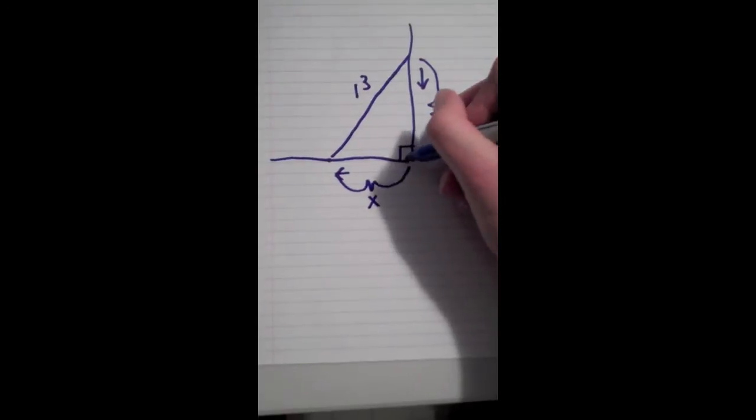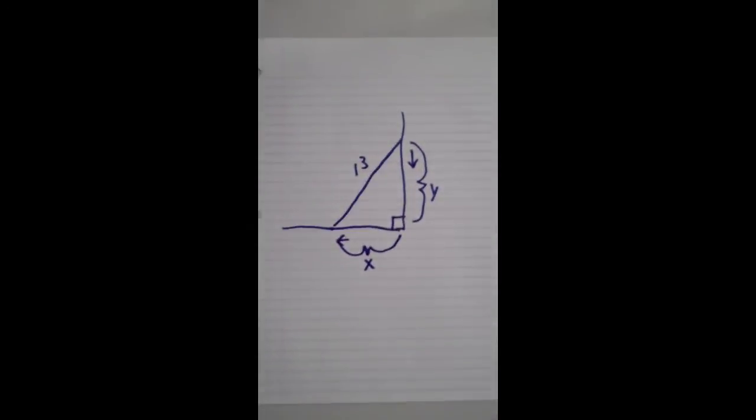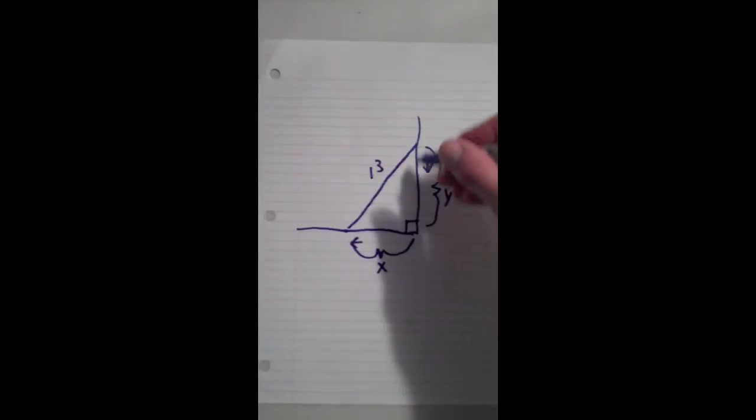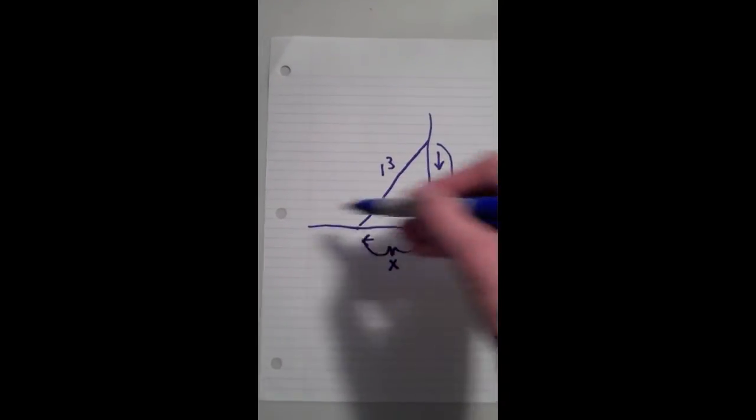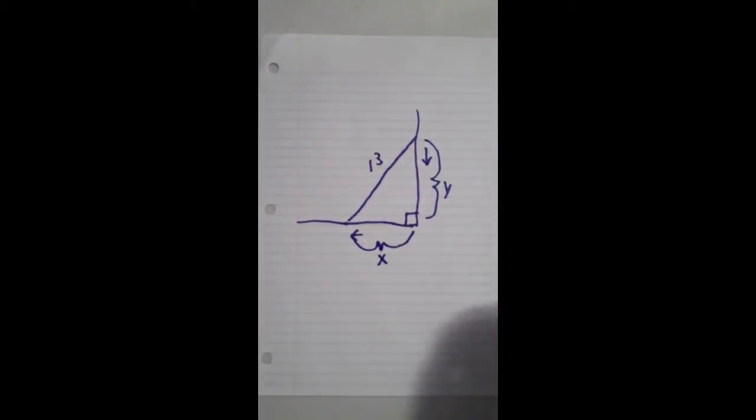This is the right angle at the wall. And so as the ladder slides down, the top of it slides down, the bottom of it slides out as it falls under itself flat onto the ground.